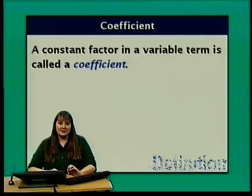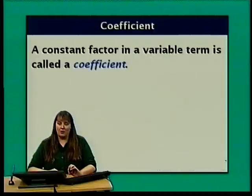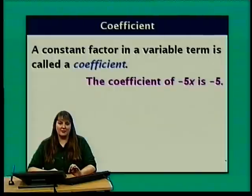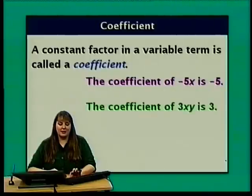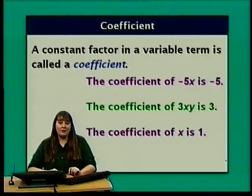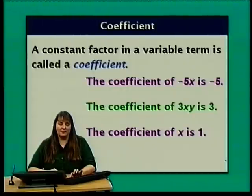A constant factor in a variable term is called a coefficient. The coefficient of negative 5x is negative 5. The coefficient of 3xy is 3. And the coefficient of x, which we can think of as 1 times x, is 1.